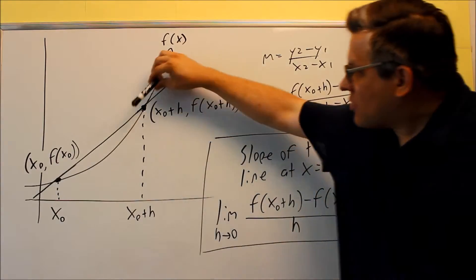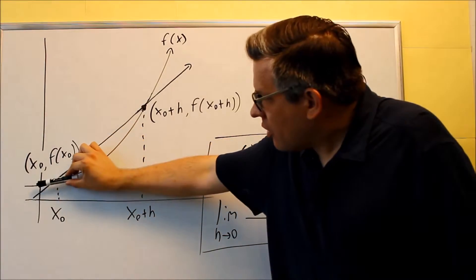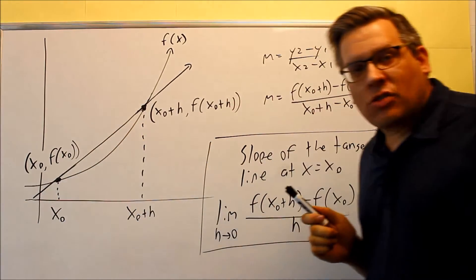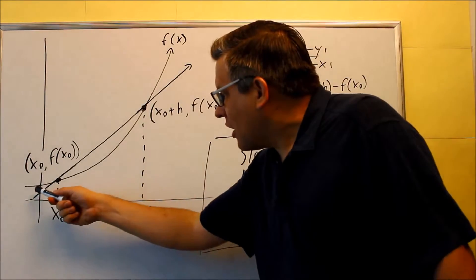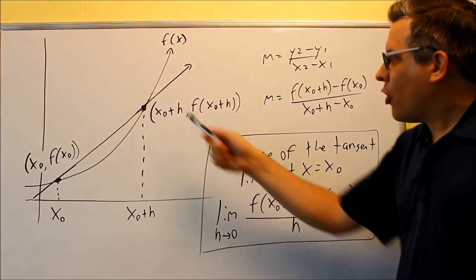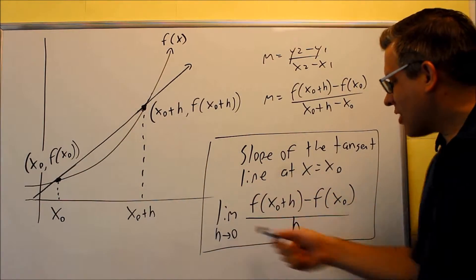What also happens is instead of having two points on here, the slope is changing, changing, changing to where we'll be able to have what's called a tangent line. A tangent line is going to be a line that touches that point right here only at one spot. So it means that both points are actually combined together into a single one, and that's where we get this.